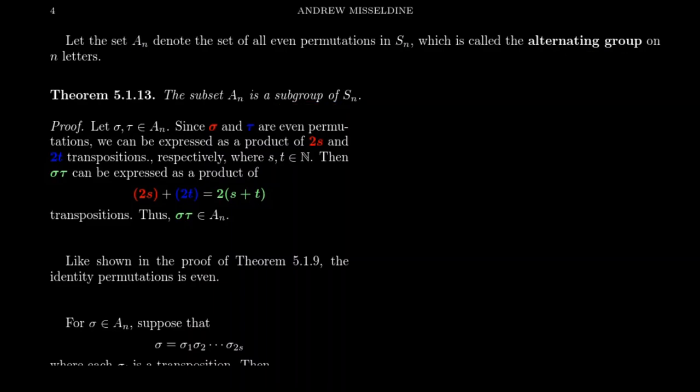There are a couple of ways to see that A_n is a subgroup. One argument I really like, based on the previous proof, is that with the language of permutation matrices, the alternating group consists of permutation matrices with determinant equal to one. Therefore, the alternating group is the intersection of the permutation group inside the general linear group with the special linear group. The intersection of two subgroups is a subgroup. However, there's a lot we haven't proven about matrix groups yet, so we'll try a more elementary approach.